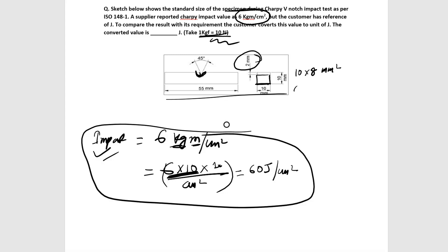Now we need to convert this into cm square, so we can write it like 1 into 0.8 cm square. So that equals 0.8 cm square.